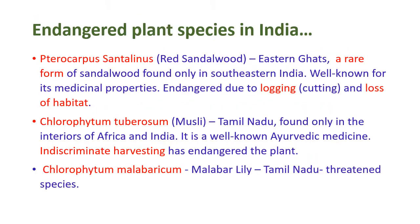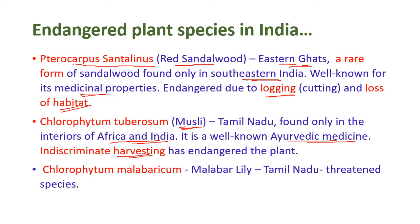Pterocarpus santalinus, the red sandalwood tree, is found in the Eastern Ghats — a rare form of sandalwood found only in southeastern India, well known for its medicinal properties, and endangered due to logging and habitat loss. Chlorophytum tuberosum, the musli plant from Tamil Nadu, is a well-known ayurvedic medicine whose indiscriminate harvesting has led to its endangered status. Chlorophytum malabaricum, the Malabar lily from Tamil Nadu, is also a threatened species.